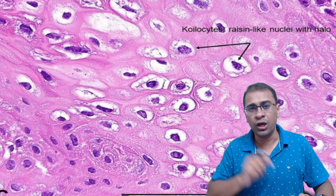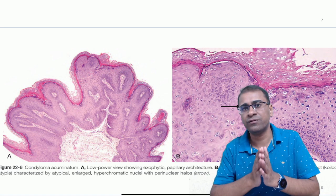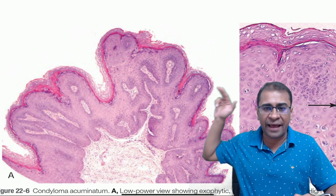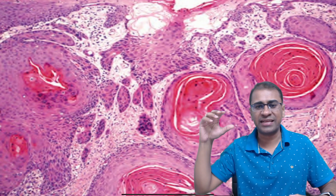E6 inhibits P53 and E7 inhibits the RB protein of the human body. It is called condyloma acuminatum. A condyloma acuminatum is this type of growth which has a koilocyte in this area. It basically is a benign tumor of the squamous epithelial cells, because of which there is a papillary growth, and these papillary growths at higher magnification will show you koilocytes.